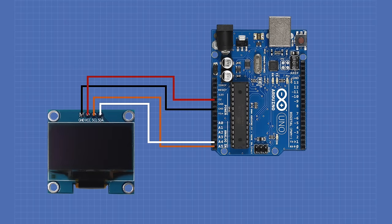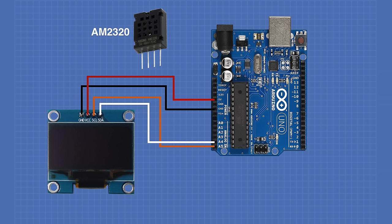To build our temperature and humidity display, we start with the same I2C display circuit we already have, then add the AM2320 temperature and humidity sensor. Connect the sensor as follows: first pin to VCC (5 volts from the Arduino); second pin is SDA connected to analog A4; third pin is ground; and the far right pin is SCL connected to analog A5. Now let's take a look at the sketch we'll use to display the temperature and humidity on the OLED.